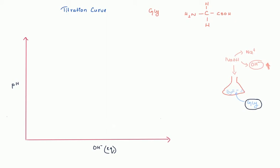Starting off, when OH⁻ is very low, the pH increases slowly. As we keep adding OH⁻ it curves upward. Tracing the curve, we can identify distinct regions corresponding to different chemical forms of glycine.